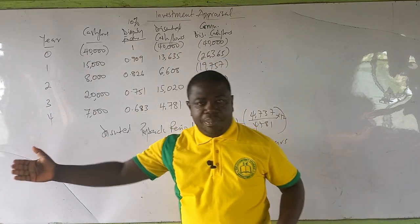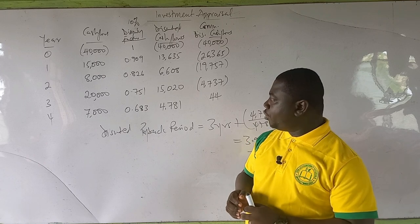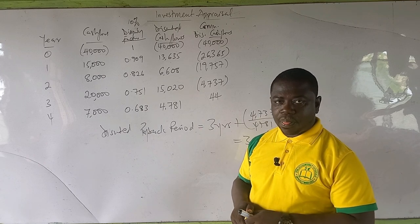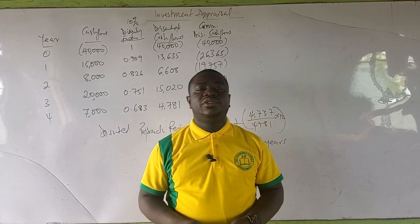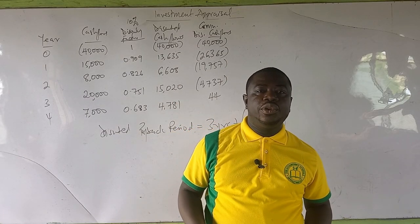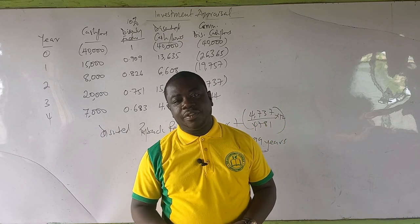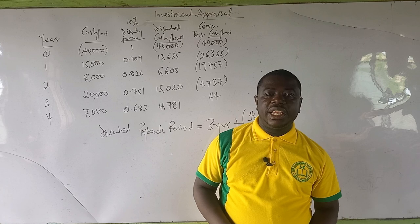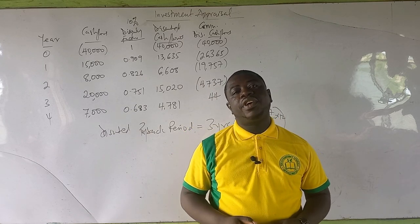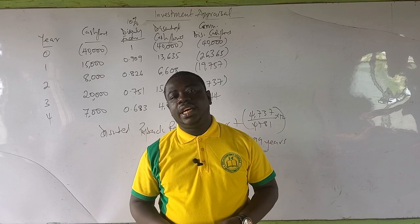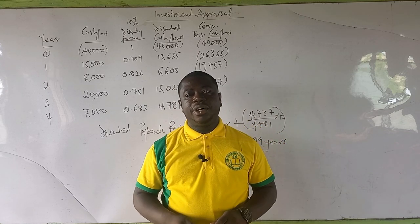We have now learned the regular payback period and the discounted payback period. This brings us to the end of part four of our video on investment appraisal. In part five, I'm going to talk about the net present value and then the internal rate of return. Remember to subscribe to this channel if it's your first time, share this video, and until we meet again — bye for now, thank you.